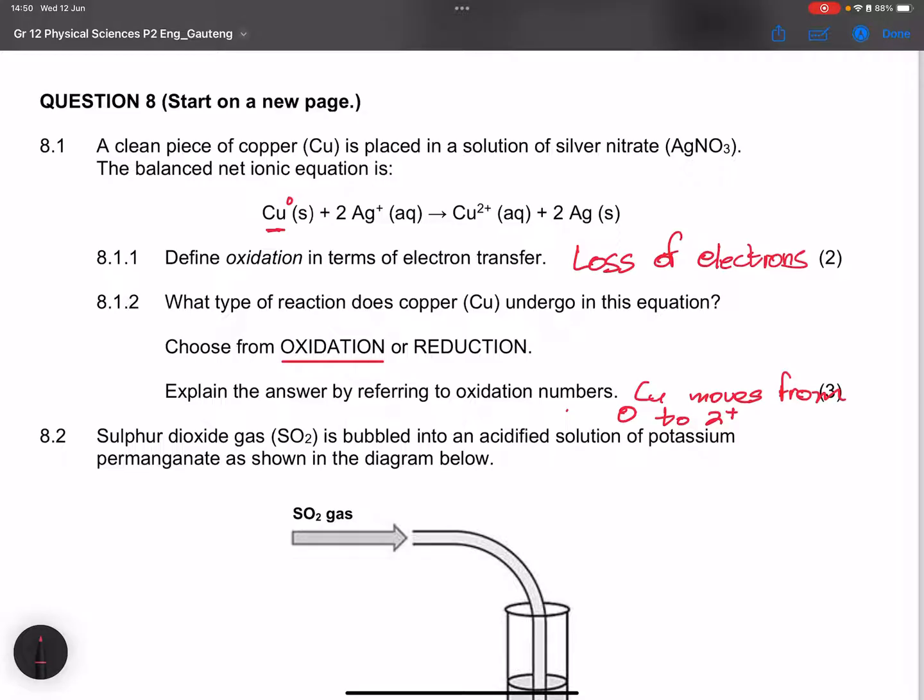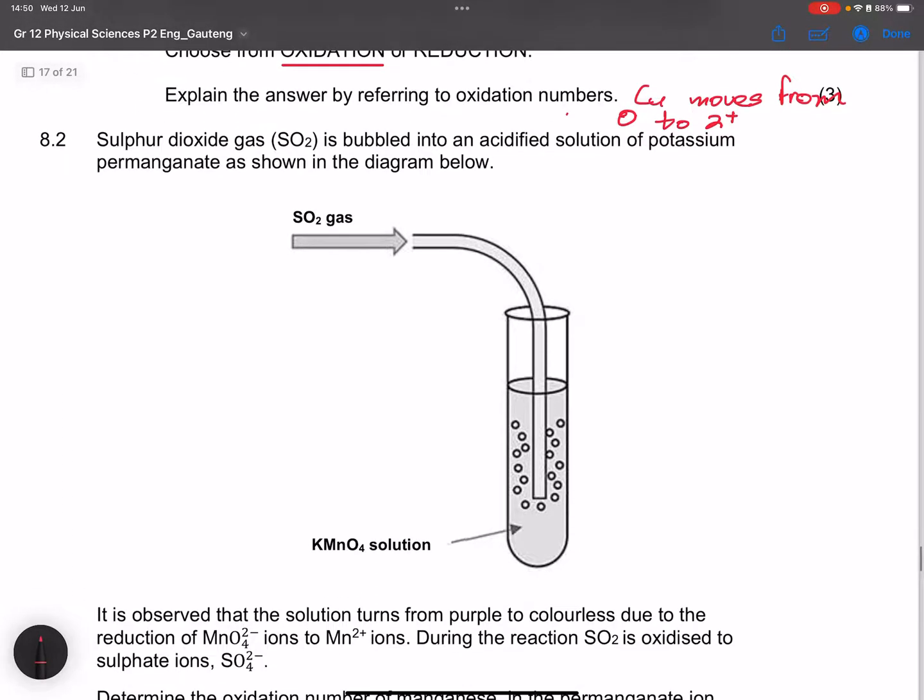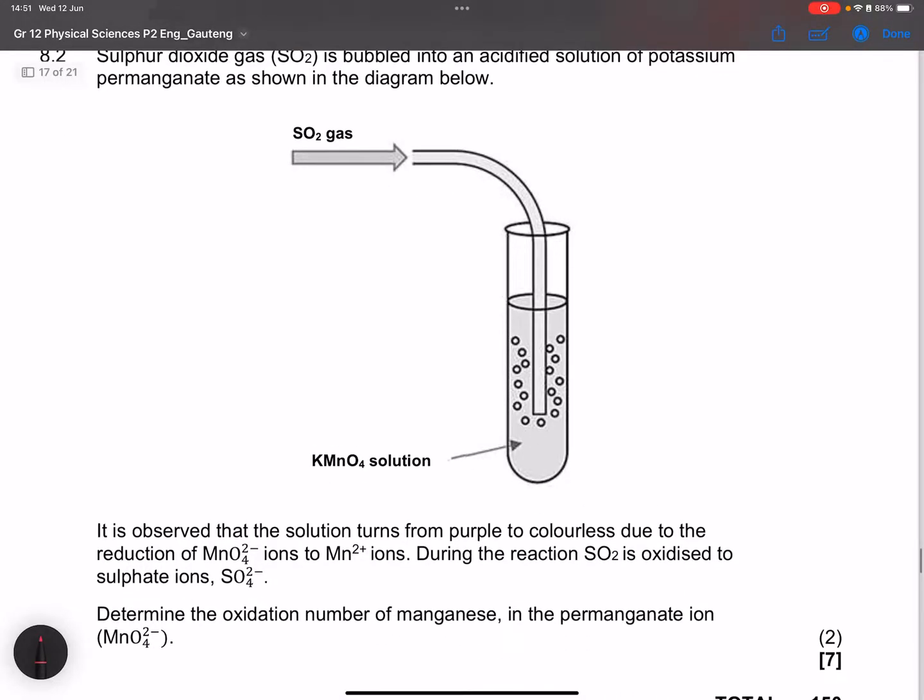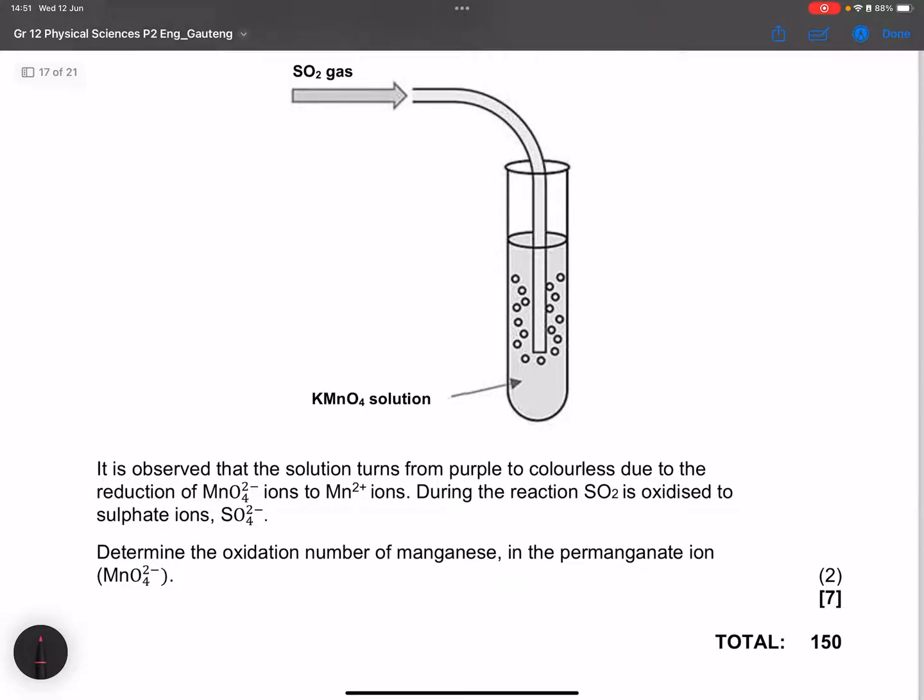They say sulfur dioxide gas, that is SO2, is bubbled into an acidified solution of potassium permanganate, as shown in the diagram below. So there we go. We've got potassium permanganate.